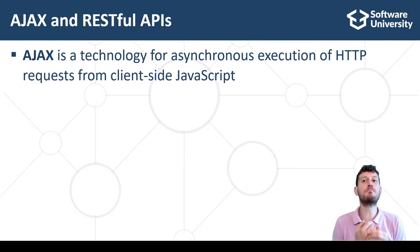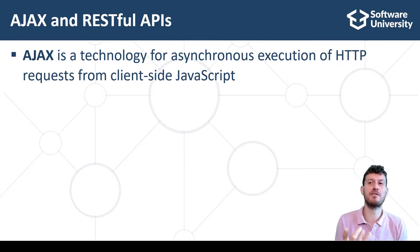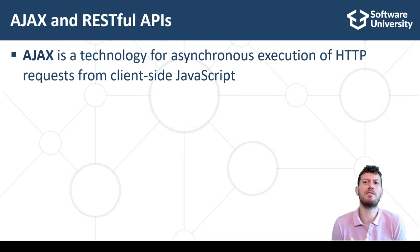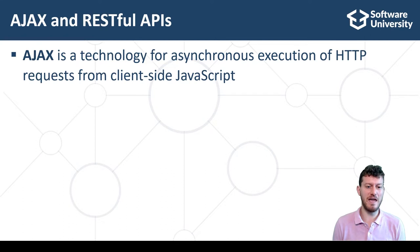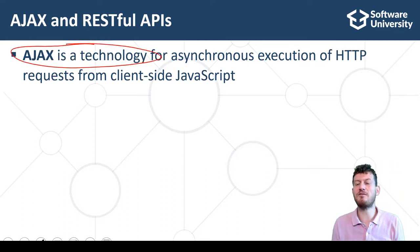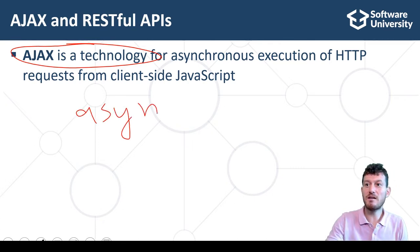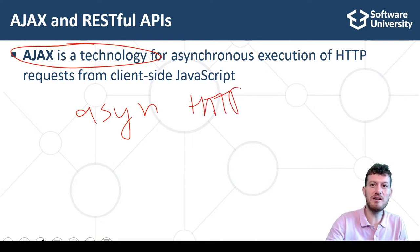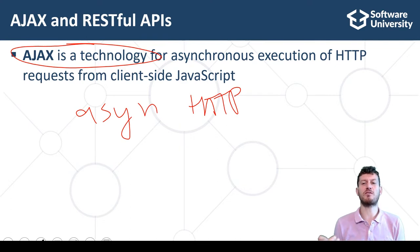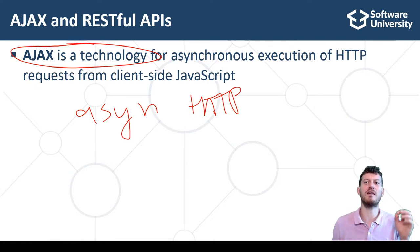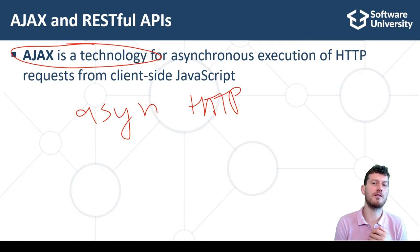Let's talk about an important web front-end concept and technology: AJAX. AJAX stands for Asynchronous JavaScript and XML. This acronym doesn't describe its nature well, but this is for historical reasons, from the time when XML was popular. A better description is: AJAX is a technology for asynchronous execution of HTTP requests from client-side JavaScript code. JavaScript front-end apps use AJAX to access backend services and APIs and consume data from the web server over the HTTP protocol.